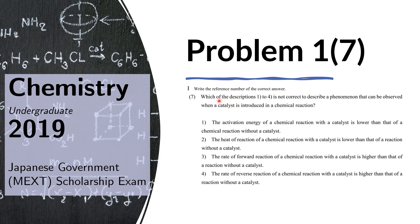Problem 1.7: Which of the descriptions 1 to 4 is NOT correct to describe a phenomenon observed when a catalyst is introduced in a chemical reaction? A catalyst lowers the activation energy, so the forward reaction becomes faster and the reverse reaction also becomes faster. Therefore, choices one, three, and four are correct statements. Choice two, however, is not necessarily true because a catalyst does not change the enthalpy of reaction — it only speeds up the reaction. Therefore, the answer is choice two.